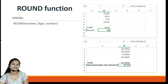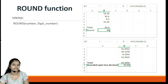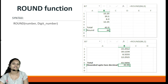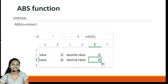Next is the ROUND function, used to round a value to a specified number of decimal places. The syntax is ROUND(number, digits) — where number is the value to round and digits specifies how many decimal places to round to. For example, with the number 43.9, we apply equals ROUND, select the cell or enter the value, and specify the number of digits. The result is displayed accordingly. Next is the ABS — Absolute — function, used to find the absolute value of a given integer.